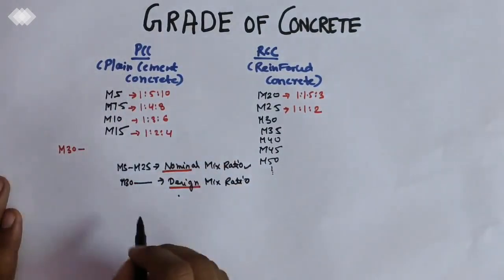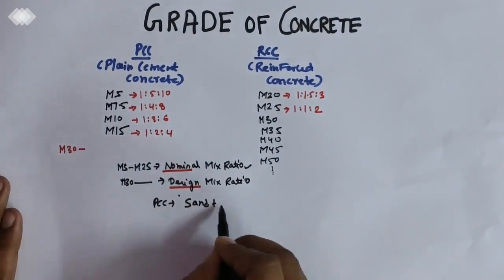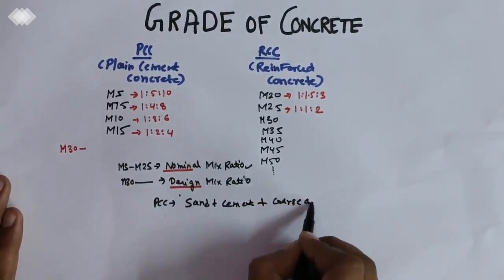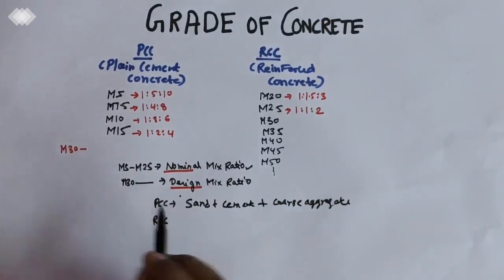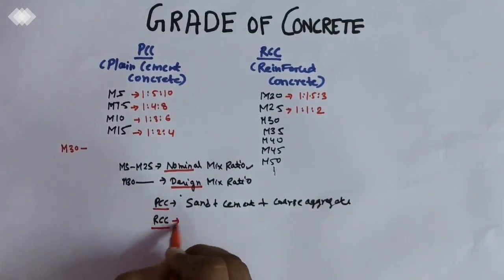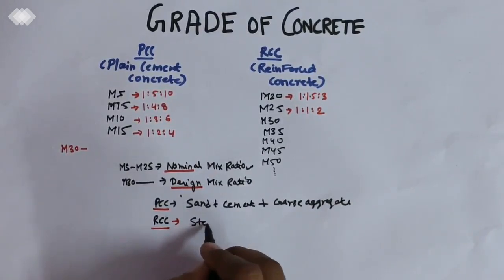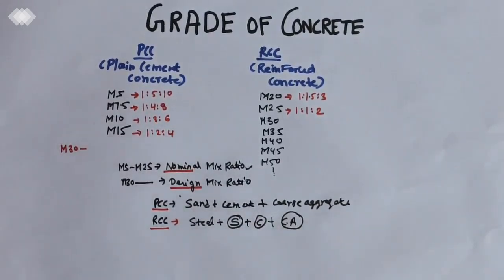The PCC ratio includes sand plus cement plus coarse aggregate, while in RCC it includes steel, sand, cement, and coarse aggregate.